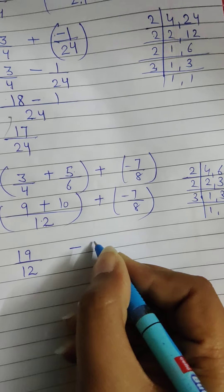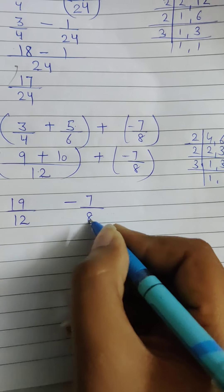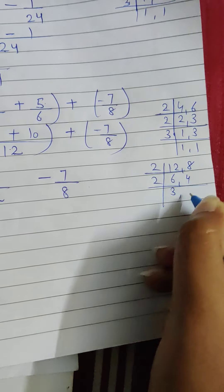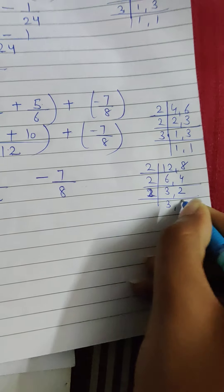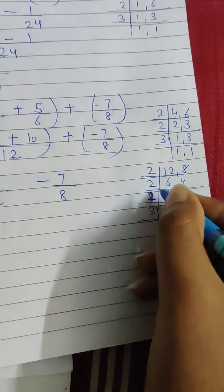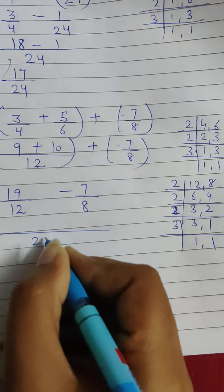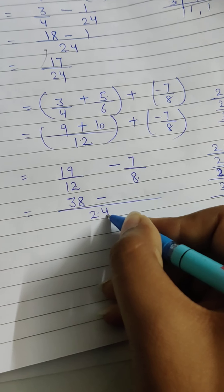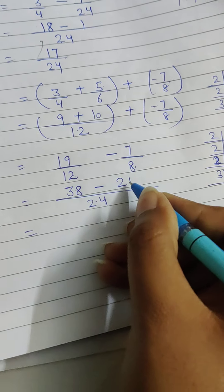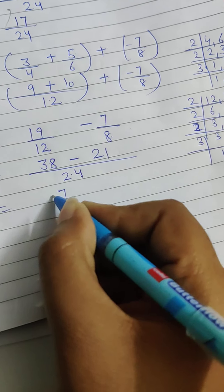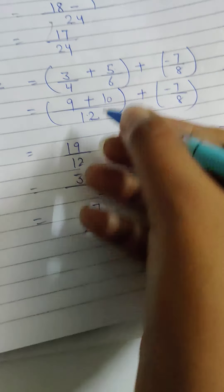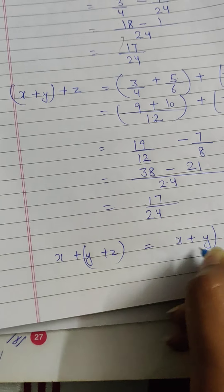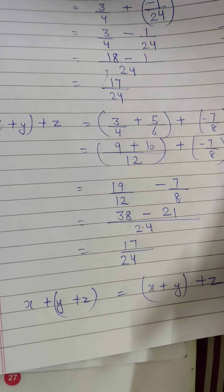Now we have nineteen by twelve plus minus seven by eight. The two symbols together give minus, so it is nineteen by twelve minus seven by eight. Finding the LCM of twelve and eight: their LCM is twenty-four. Twelve table twenty-four is two, so two times nineteen is thirty-eight. Eight table twenty-four is three, so three times seven is twenty-one. Bigger number minus smaller: thirty-eight minus twenty-one equals seventeen by twenty-four. Both LHS and RHS give the same result — seventeen by twenty-four — so x plus (y plus z) equals (x plus y) plus z is proved.